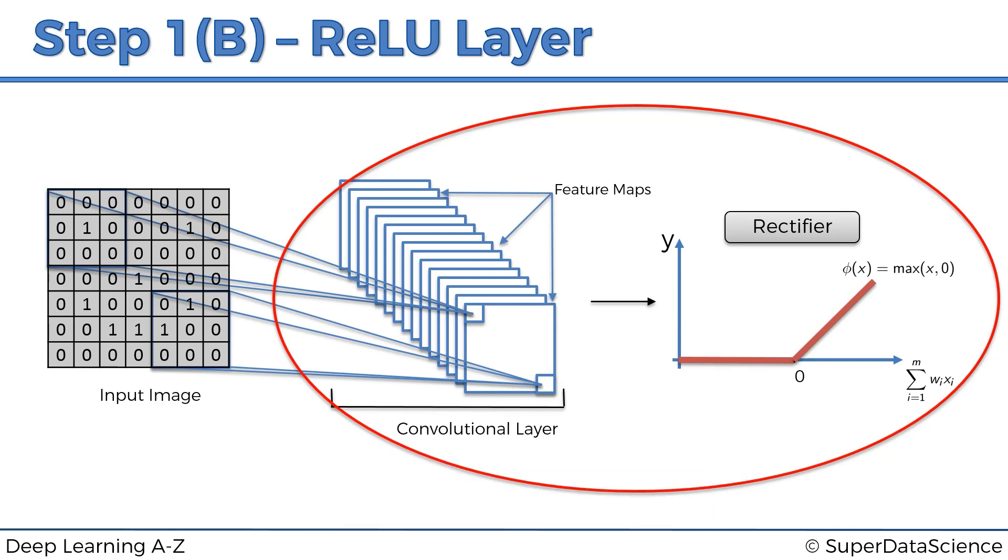Rectifier acts as that filter or function which breaks up linearity. And the reason why we want to increase non-linearity in our network is because images themselves are highly non-linear. Especially if you're recognizing different objects next to each other or on backgrounds. The image is going to have lots of non-linear elements and the transition between pixels, adjacent pixels, is often going to be non-linear. That's because there's borders, there's different colors, there's different elements in your images.